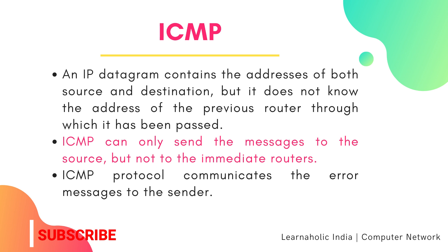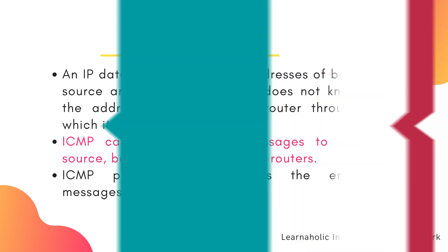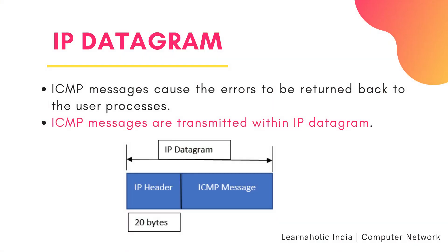Due to this reason, ICMP can only send messages to the source, but not to the immediate routers. ICMP protocol communicates the error messages to the sender, and ICMP messages cause the errors to be returned back to the user processes. ICMP messages are transmitted within IP datagrams. The following figure shows an IP datagram in which the IP header is 20 bytes and the ICMP message is 32 bits.